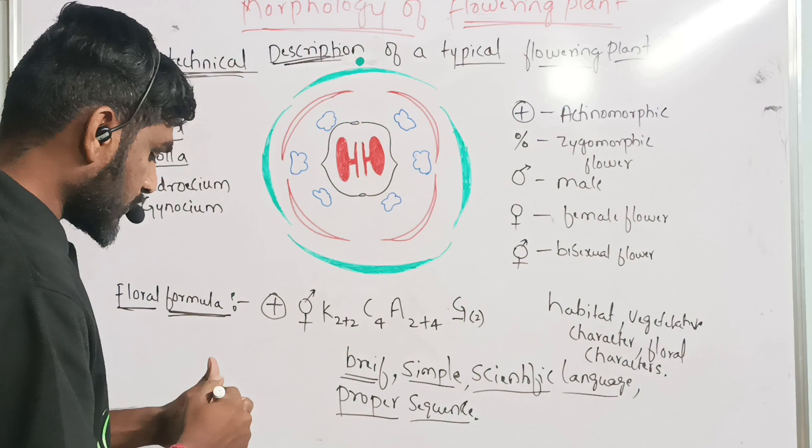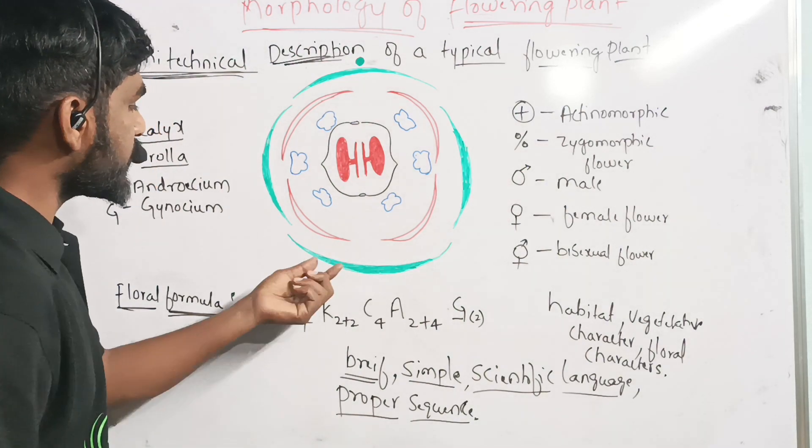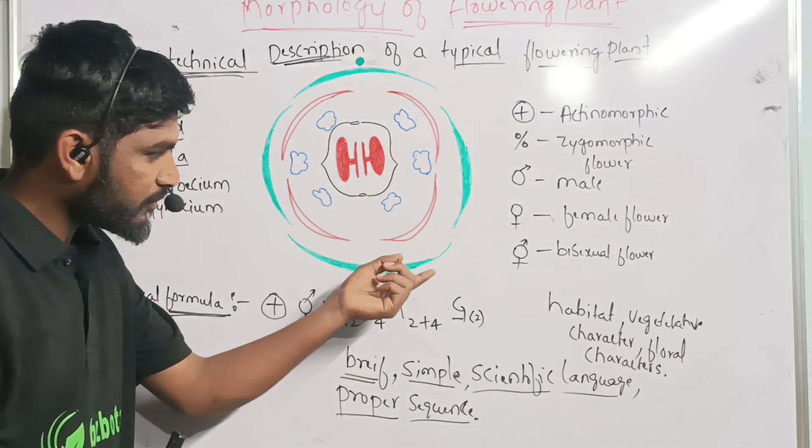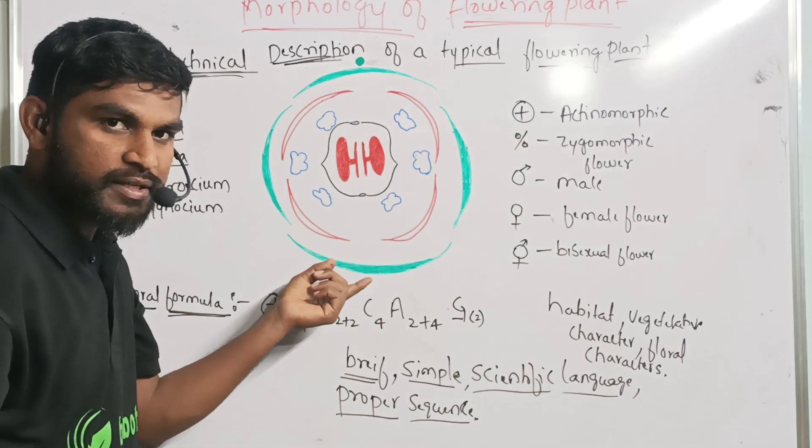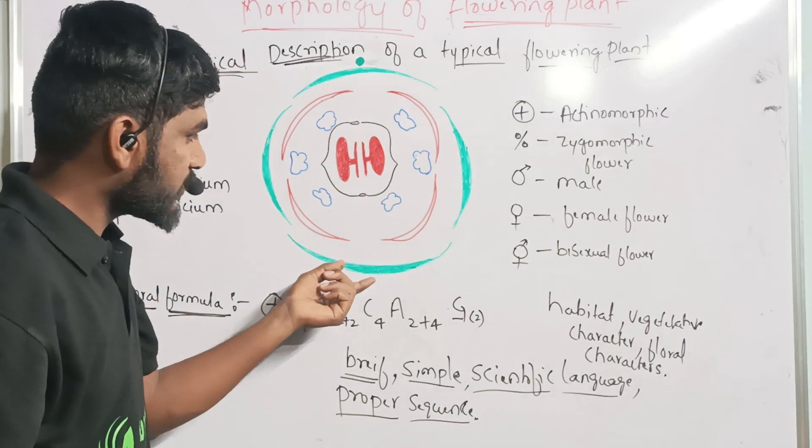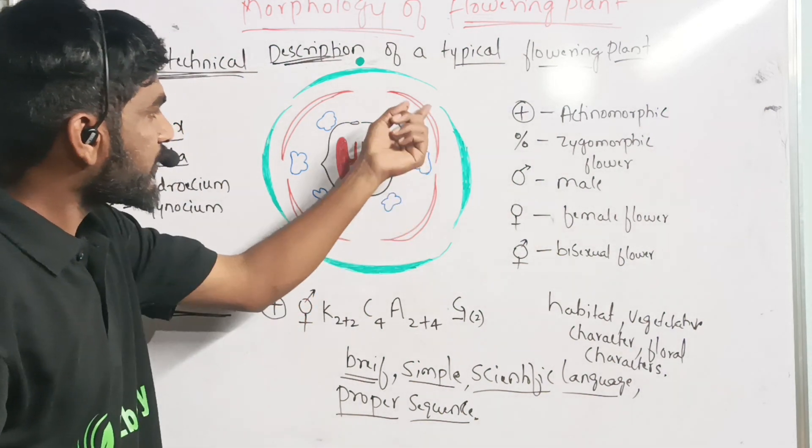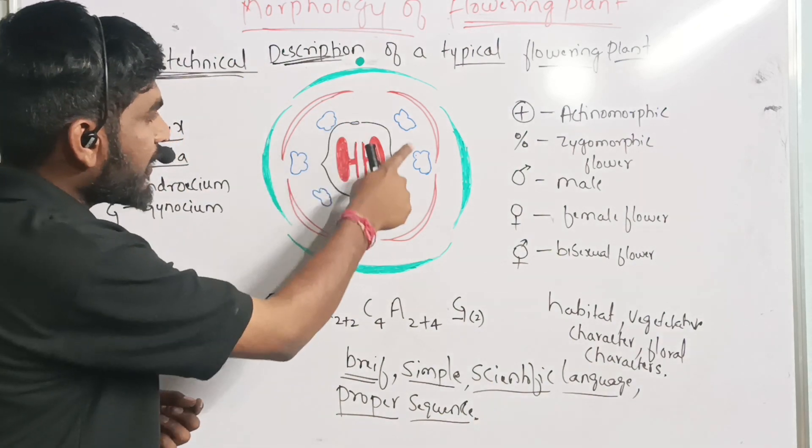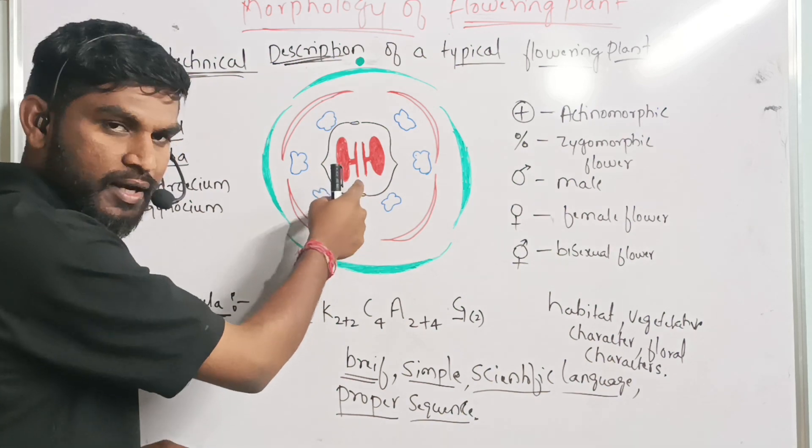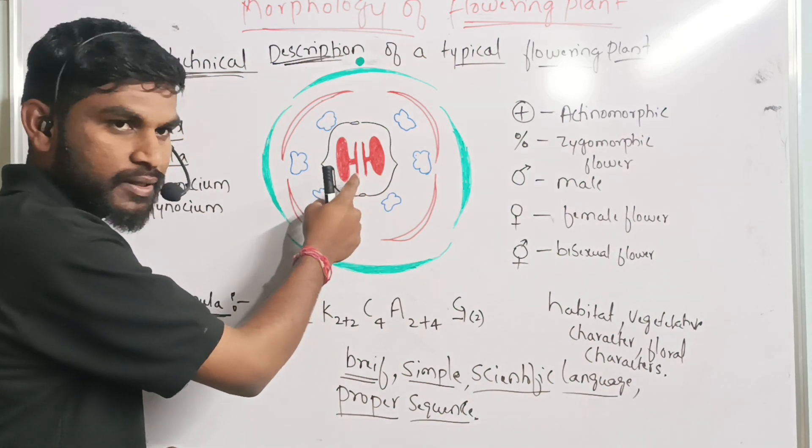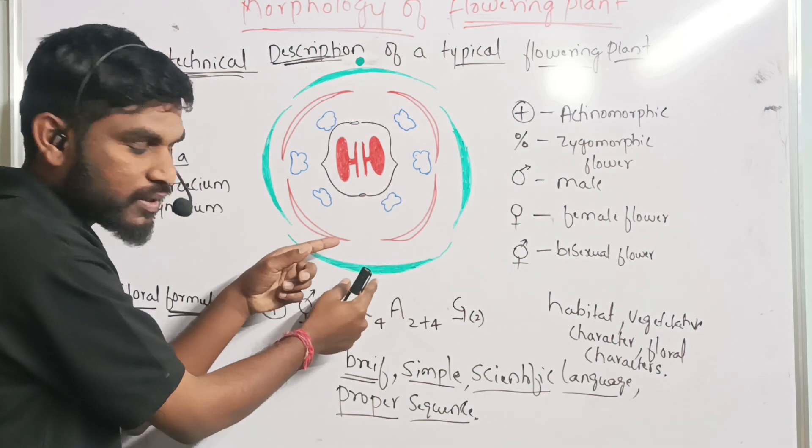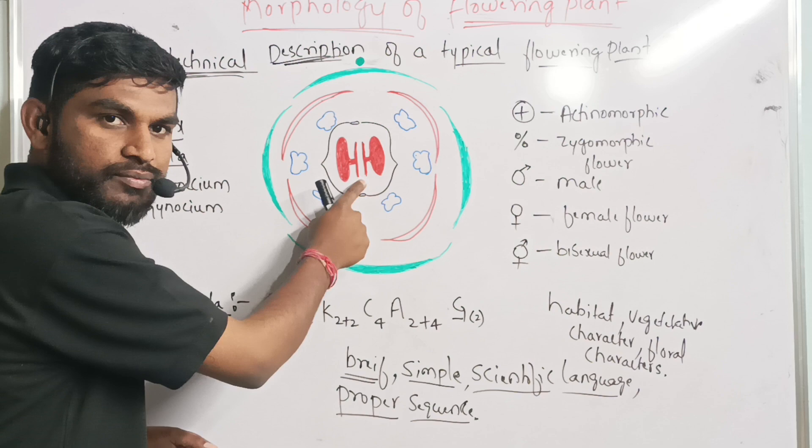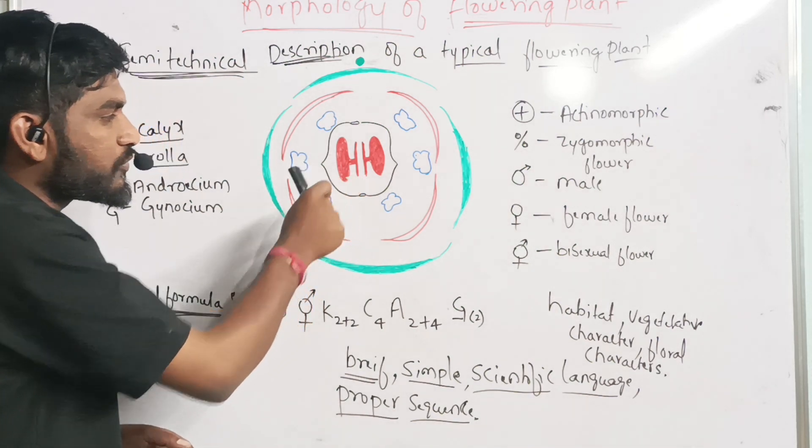In floral diagrams, this green part indicates the calyx of the flowers. This red part indicates the corolla of the flowers. These are the androecium part. And the innermost part of the floral diagram is gynoecium. The outermost part of the floral diagram is calyx, and the center part of the floral diagram is gynoecium.